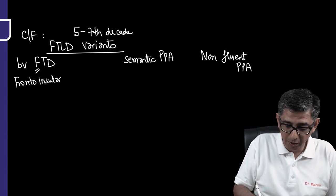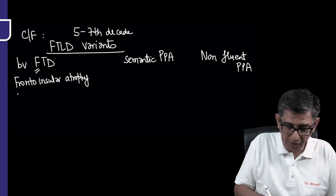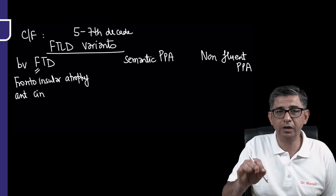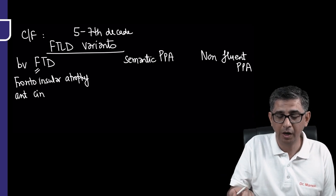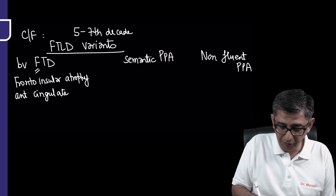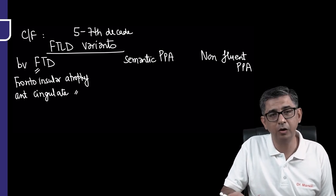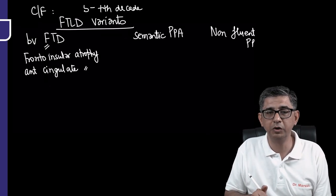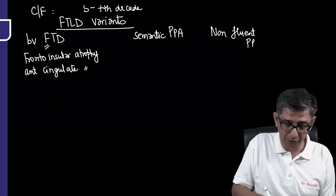For the behavioral variant, most exam questions on frontotemporal lobar degeneration will focus on this variant. The atrophy will be in two areas: the fronto-insular cortex and the anterior cingulate. They would be completely lost in social graces.